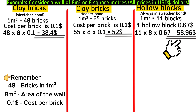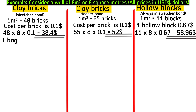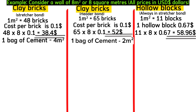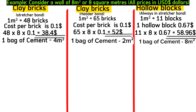We mix cement and sand to make mortar to bind bricks and blocks. One bag of cement completes approximately four square meters in stretcher bond, two square meters in header bond, and eight square meters for hollow blocks. So we use significantly less cement when using hollow blocks.